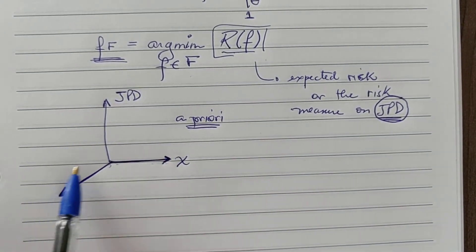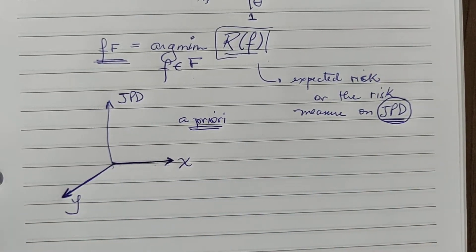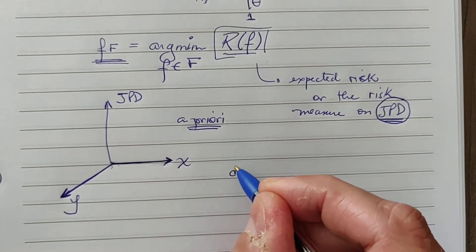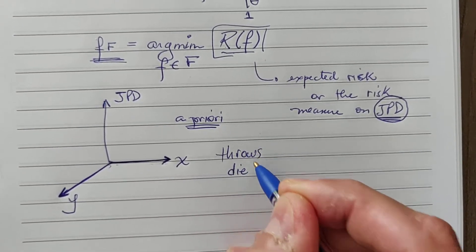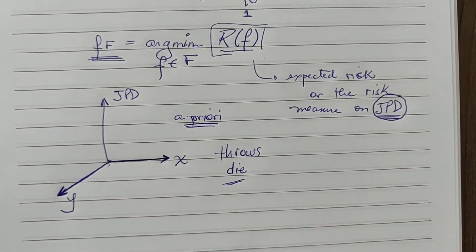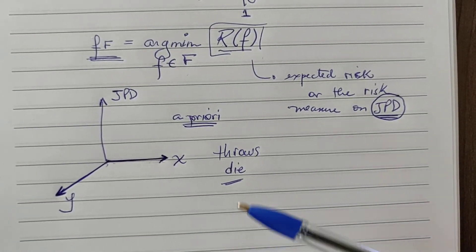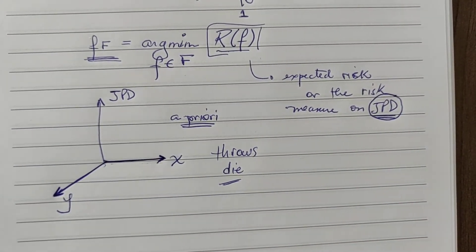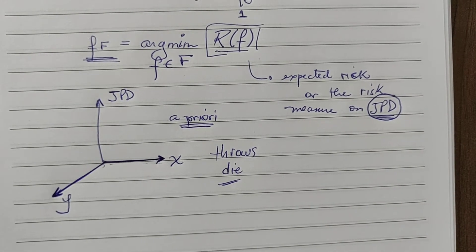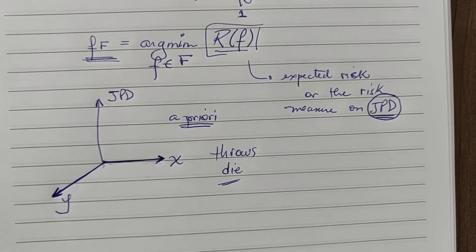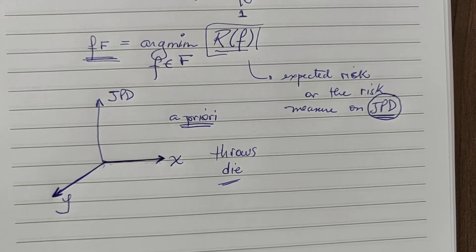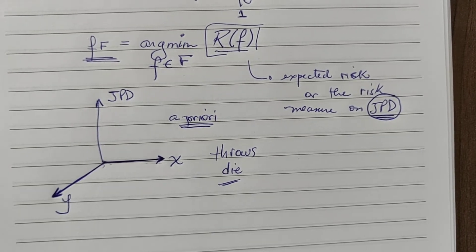If I work with a toy scenario I could know the joint probability distribution, but that's not the case with real-world problems. I receive some inputs x, some expected outputs y, and I build up the joint probability distribution from the data I receive during data collection. Especially if my problem accepts an infinite number of different inputs and outputs, it becomes impossible to come up with an a priori joint probability distribution.